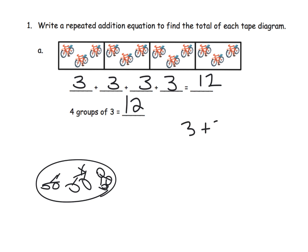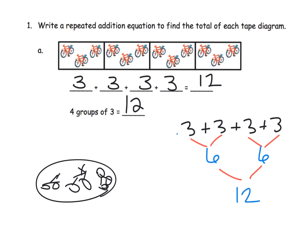This is a good place to remind students of the previous lesson where we used doubles to get our answer. Three plus three is six, and three plus three is six, and then six plus six is twelve. This is our inverted pyramid — or upside-down triangle — method to get that answer.